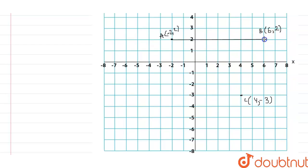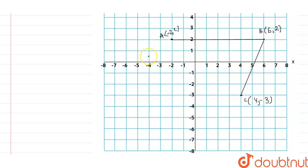Now we have to join these points to form a parallelogram. This is line segment AB. Now we join points B and C, so this is our line segment BC.